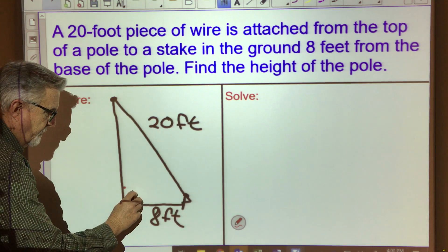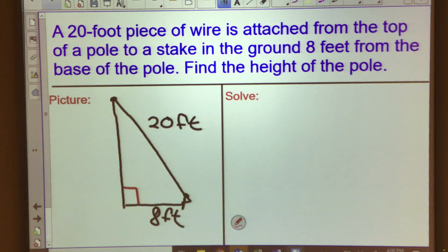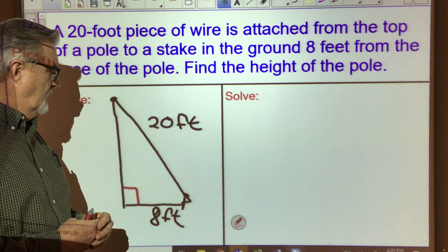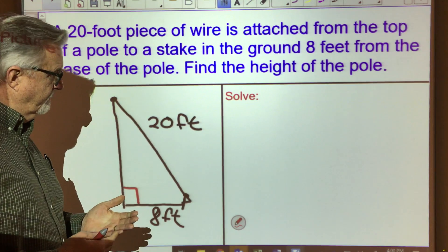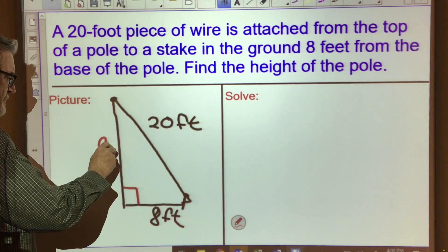And if we stop and look at this, where does it make sense that our right angle would be formed? Absolutely, where the pole and the ground meet is our 90 degree angle. So in this case, are we missing a hypotenuse or are we missing the leg? Exactly, we're missing a leg. So this is what we're looking for. Let's just call it a.